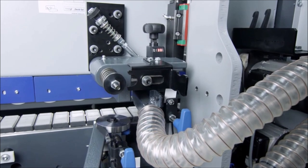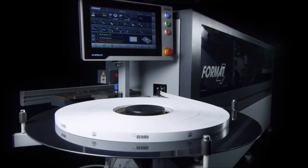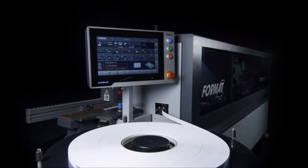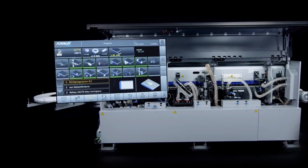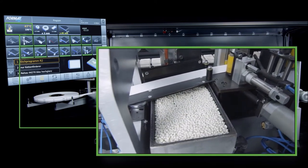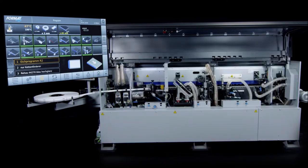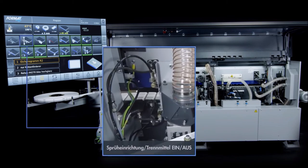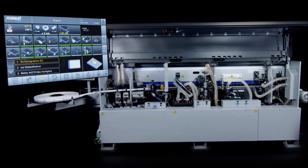The Teflon-coated glue pot has a capacity of 1.5 kilograms, enabling the application of around 375 meters of edge material to a 19-millimeter panel. The short warm-up time of just 10 minutes ensures quick readiness for operation.